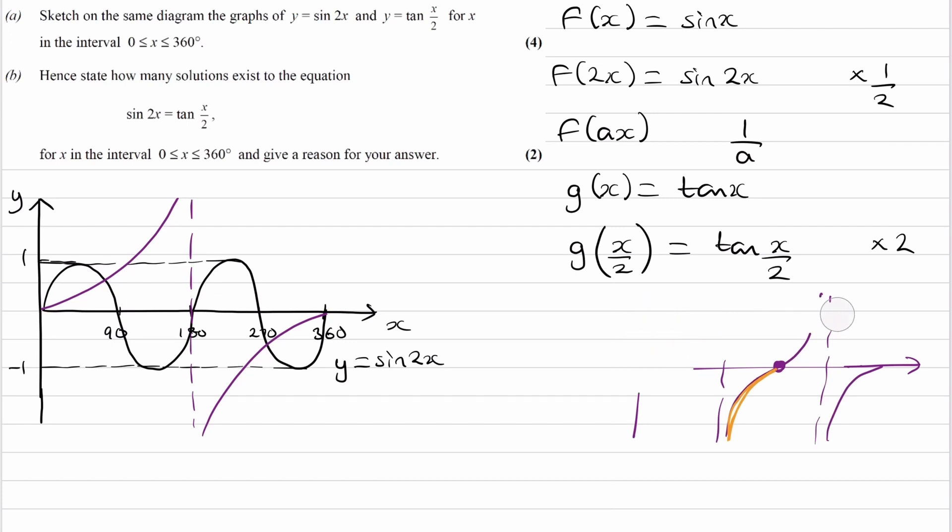For part B, hence state how many solutions exist to the equation sine 2x is equal to tan x over 2. Well, the number of solutions to this equation, in other words, where these two graphs, the y equals sine 2x and the y equals tan x over 2, it's where those two graphs meet. So those two graphs meet at four points. They meet here, at the start, here, here, and here. The question isn't asking us to state what the solutions are, just how many solutions there would be, which again is the number of intersections. So for part B, the answer would be 4.